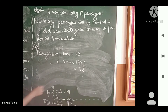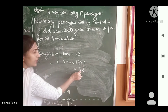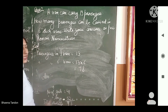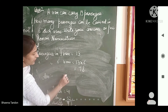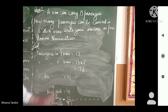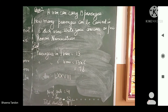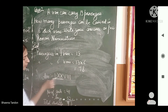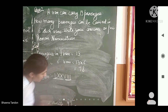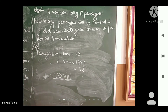Now you have to write your answer in Roman numeration. We have 70 and then 8. For 70 you write LXX, and for 8 you write VIII. So 78 in Roman numeration is LXXVIII. This is your answer in Roman numeration.